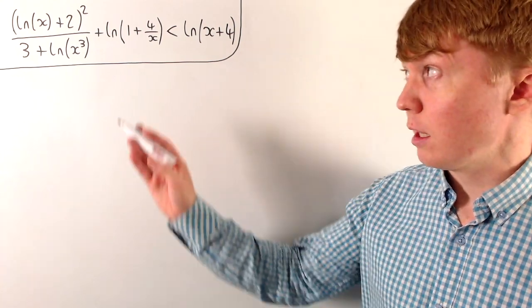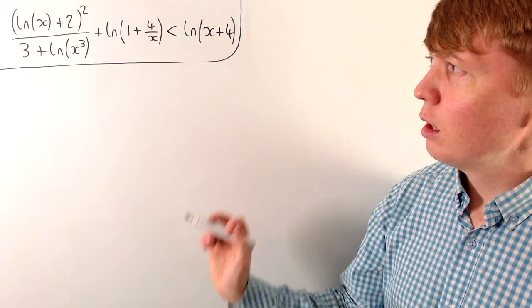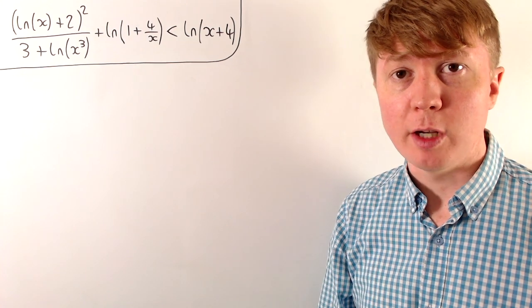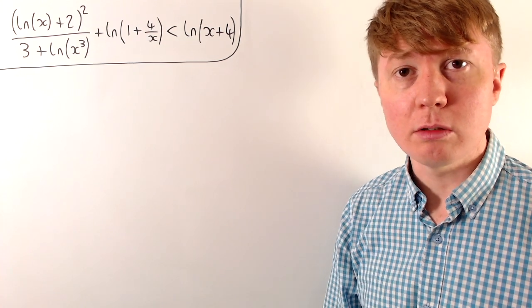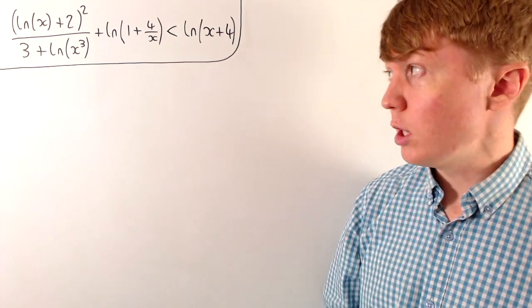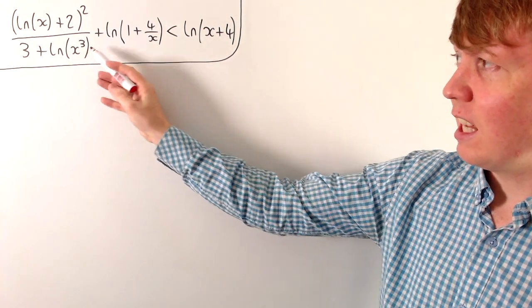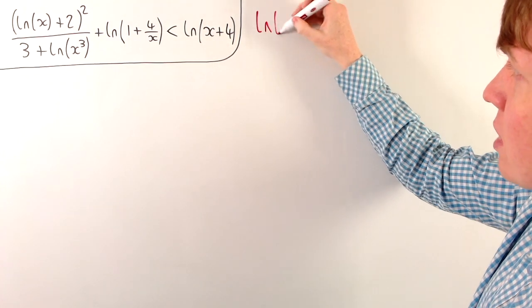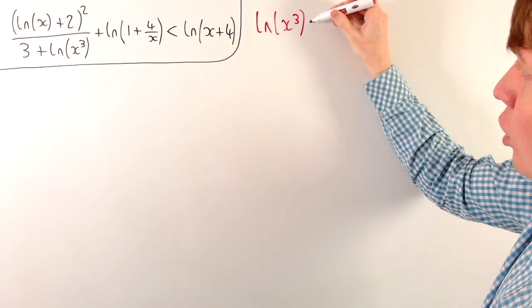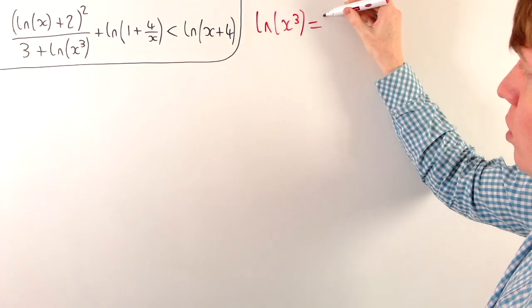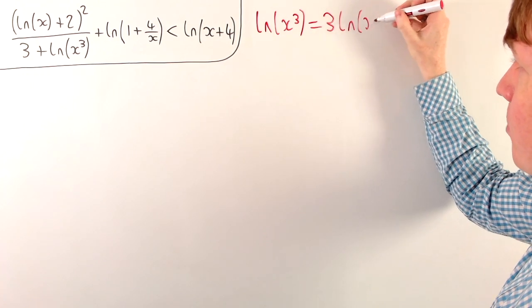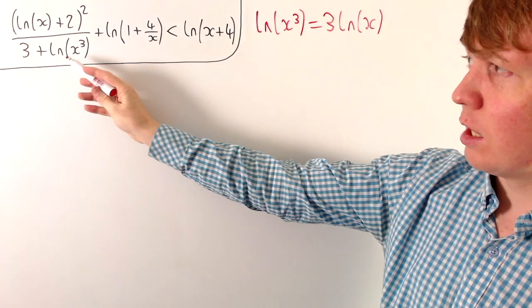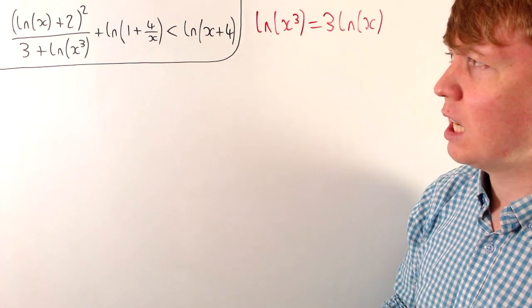We're going to solve this inequality, and the first step we'll take is to simplify a little bit. A nice first step is to take the power of 3 outside of the logarithm in the ln x cubed term. This is equivalent to 3 times ln x, so we get a slightly nicer expression in the denominator.